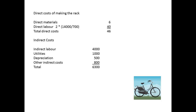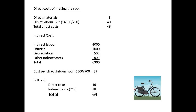Now we look at the indirect costs: labour, utilities, depreciation and other indirect costs, which total $6,300. We need a cost per hour, so we shall divide this total by the 700 hours. This gives us $9 per labour hour. So the full cost will be the $46 plus 2 hours at $9 per hour, which is $18, giving a total of $64.